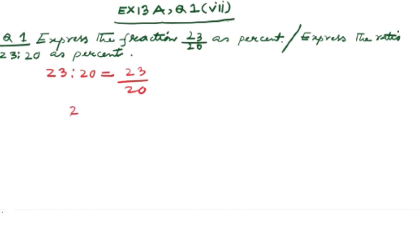Now multiplying with 100: 23 by 20 into 100. And now simplify it: 20 ones are 20 and 5 twenties are 100, so 23 into 5, this is equal to 115. And the most important thing, always remember, last step is percent symbol. So I'm writing 115 percent, and this is the answer.